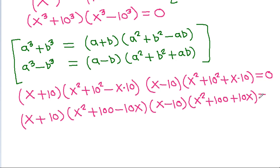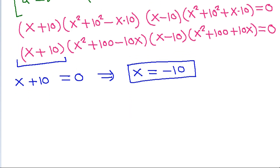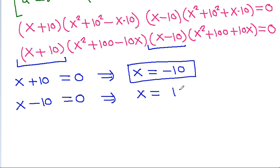Setting each factor equal to zero: x plus 10 equals 0 means x equals minus 10, and x minus 10 equals 0 means x equals 10. These are two real solutions.